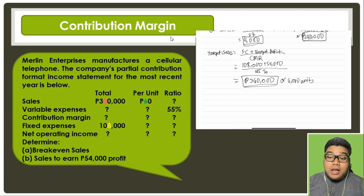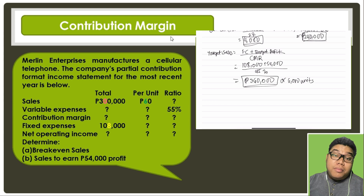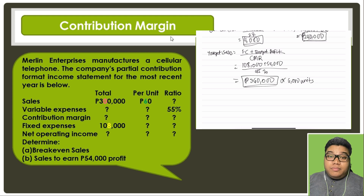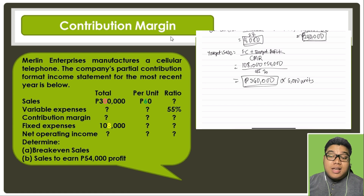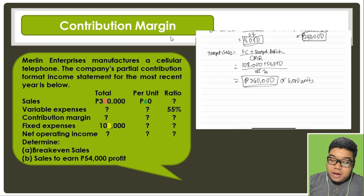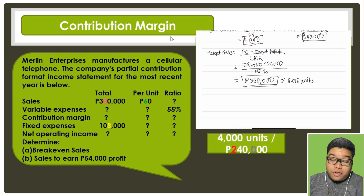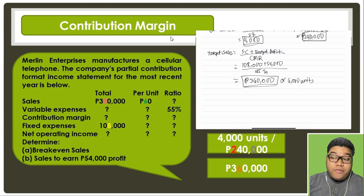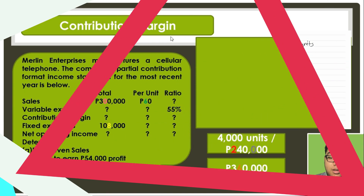To determine whether an answer should be in pesos or units, the question will specify. If it asks 'how many units should the company sell,' the answer is in units. If it asks for a sales amount, the answer is in pesos. For letter A, break-even is 4,000 units or 240,000 pesos. For letter B, sales needed to earn 54,000 profit is 360,000 pesos.